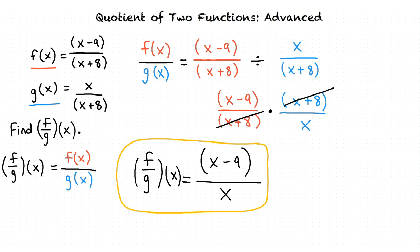Why can we cancel x plus 8 in the numerator and the denominator? The reason we can do this is because x plus 8 divided by x plus 8 is equal to 1. Essentially, we would obtain the answer 1 times x minus 9 divided by x, which when simplified equals x minus 9 divided by x.